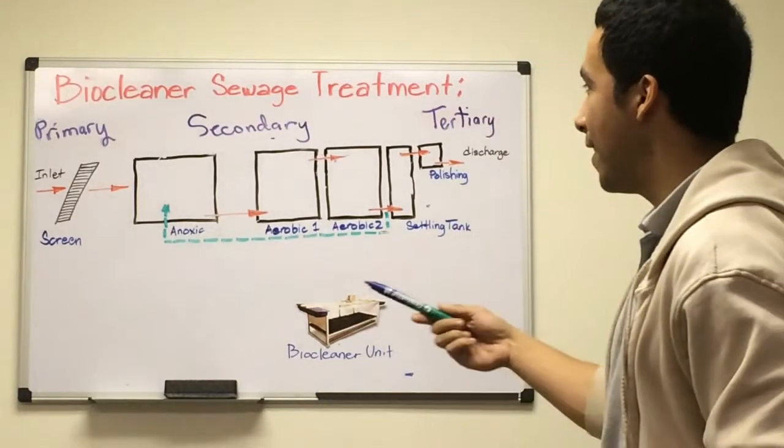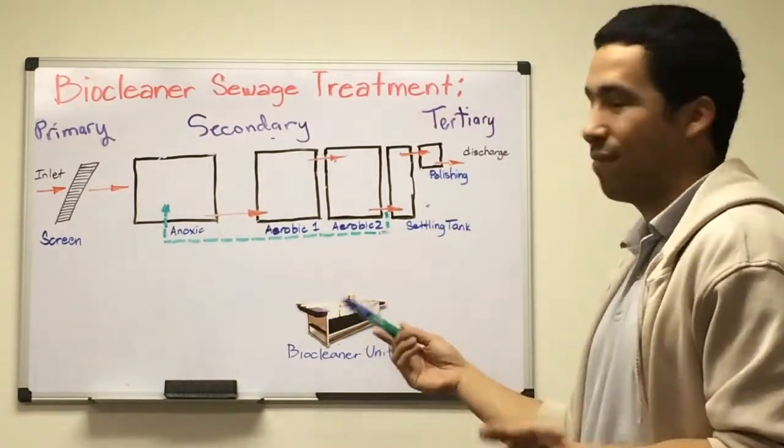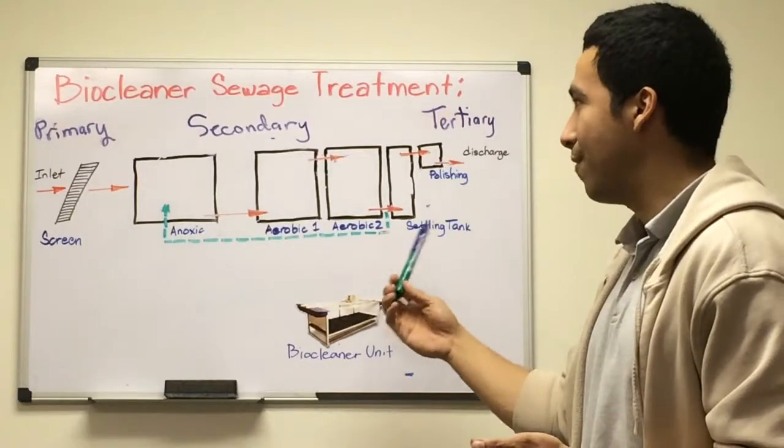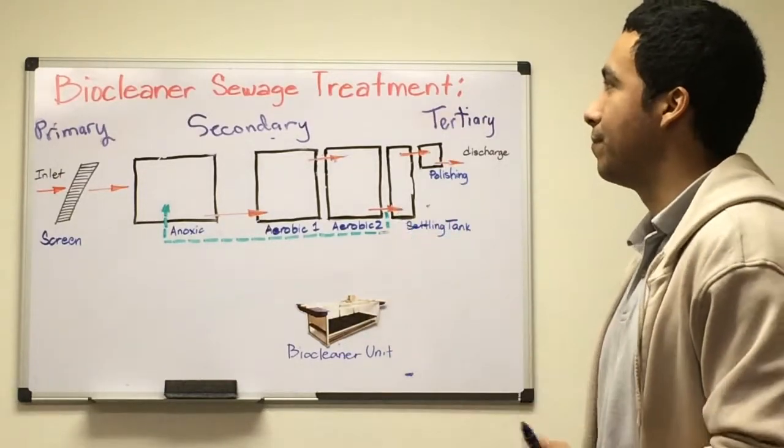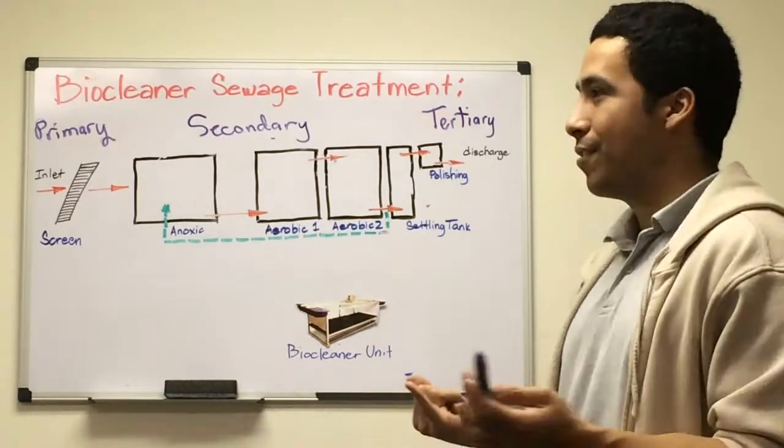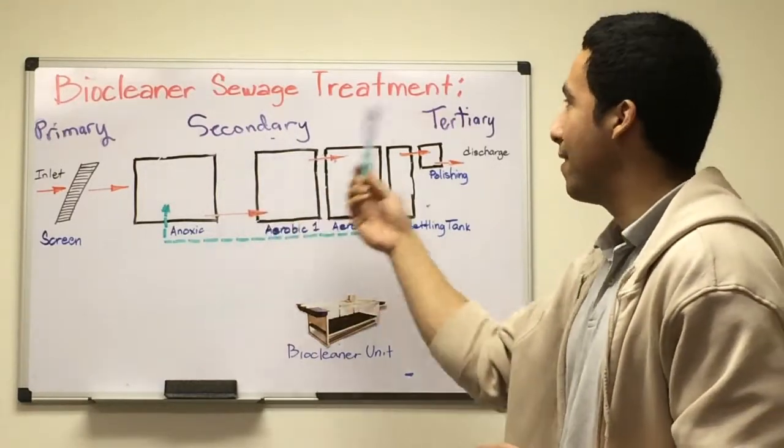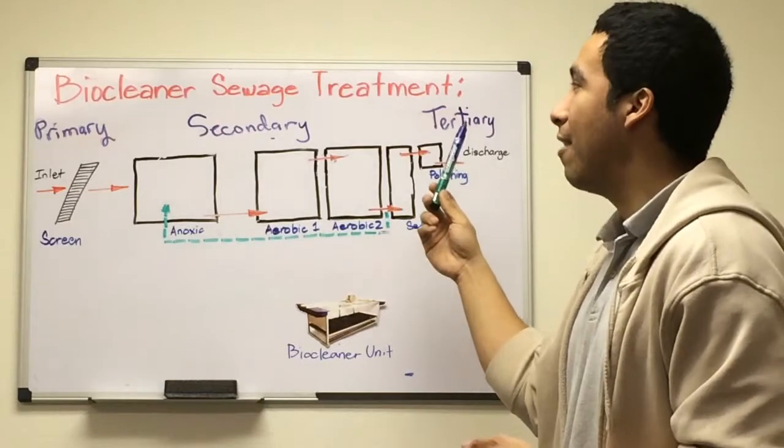As you can see in this flow chart, this is a basic wastewater flow chart for how we design a wastewater treatment facility using biocleaner. As in every traditional system, we have primary, secondary, and tertiary processes.